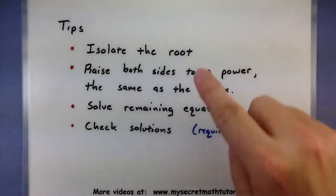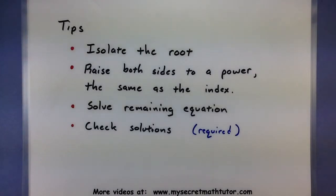First, find the root you're trying to get rid of and make sure that it's the only thing on one side of the equal sign. So just isolate it.